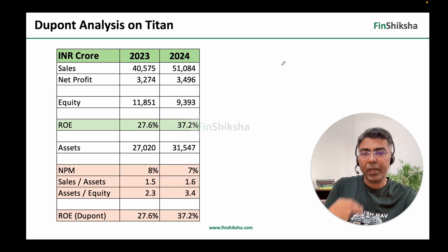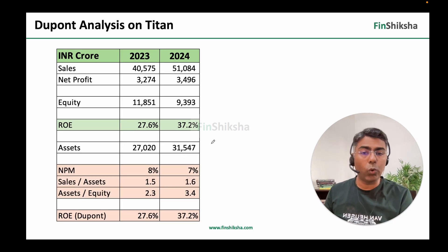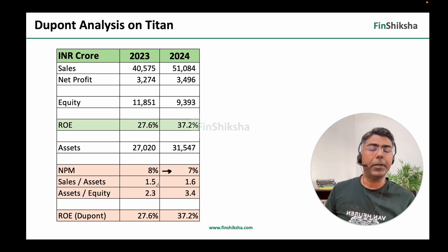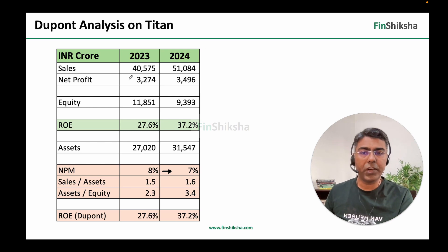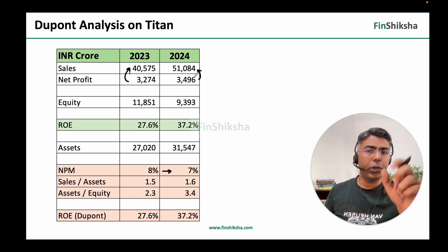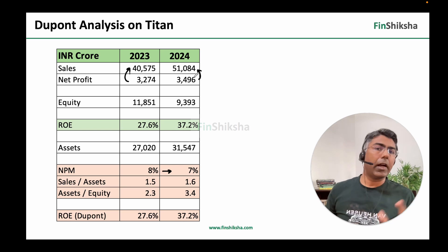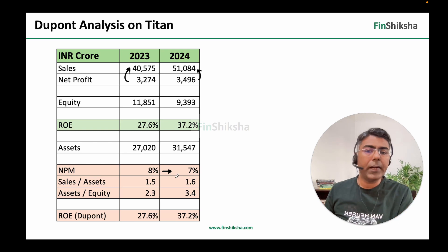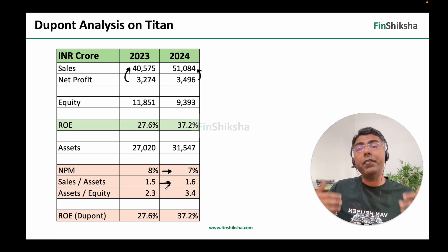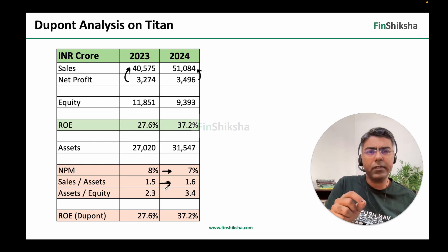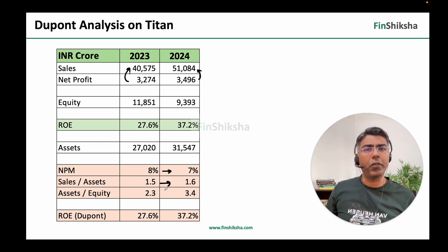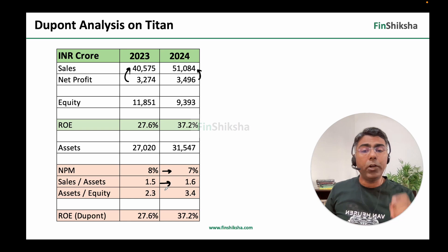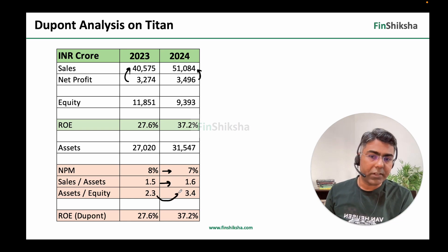If we calculate the data using total assets, we see that net profit margin has actually gone down marginally from 8% to 7% — net profit divided by sales has gone down slightly, so profitability is not improving. Sales upon assets — asset turnover — is also more or less flat, so efficiency hasn't improved dramatically either. There is a mild increase in asset turnover that roughly nullifies the dip in net profit margin. The predominant change that is coming is because of the assets upon equity component.